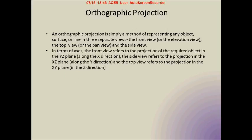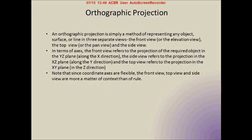In technical terms, the front view refers to the projection we get onto a screen when we look at the object in the x-direction. The side view refers to the projection in the y-direction, and the top view refers to the projection from the z-direction. One point to note is that the coordinate axes are flexible. This means the front view, top view, and side view are also flexible — it is more a matter of what we want the front view to be than what the axes tell us.